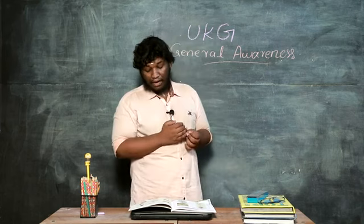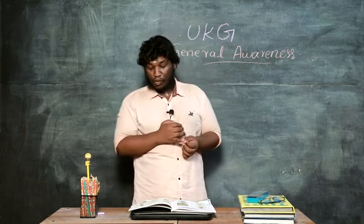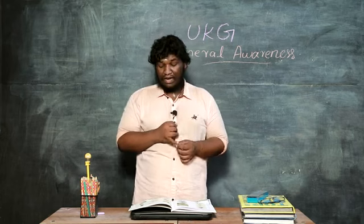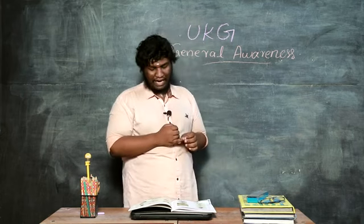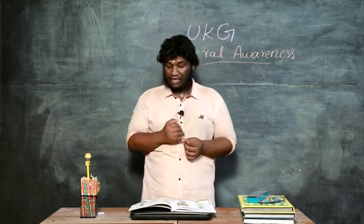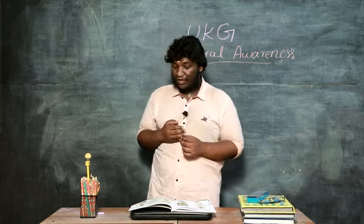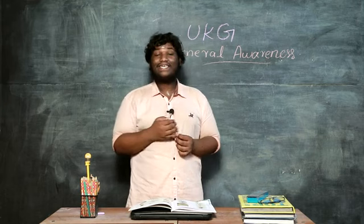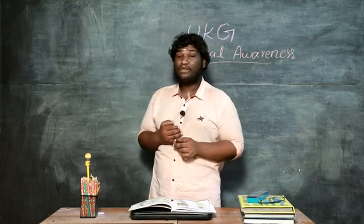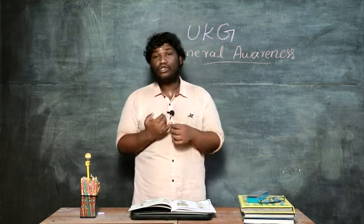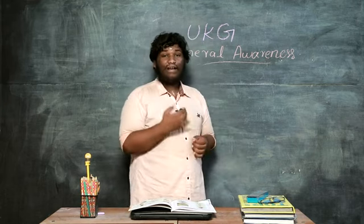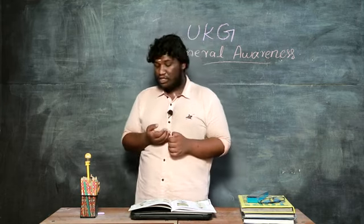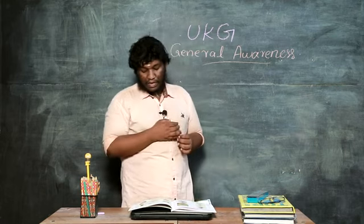Rambutan. Fruit or vegetable? It's a fruit. Then F will do. And the next one is capsicum. Capsicum is a fruit or vegetable? It is vegetable. Write V.